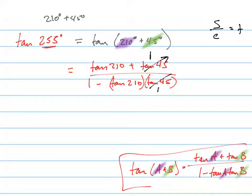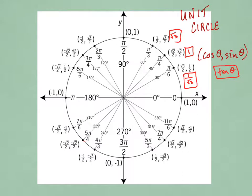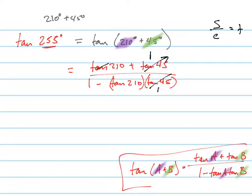210 is a little bit more difficult. So 210, let's look at my unit circle. 210 is right here, and the tangent would be the sine, which is your y-coordinate, over the cosine. So negative 1 half all over negative root 3 over 2. Flip and multiply. So that's just equal to positive 1 over root 3. Positive 1 over root 3 is this. So this is 1 over root 3.